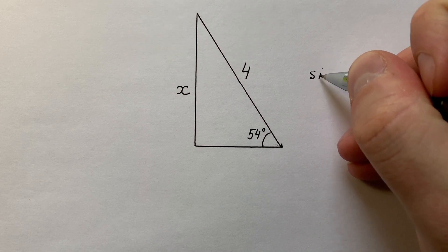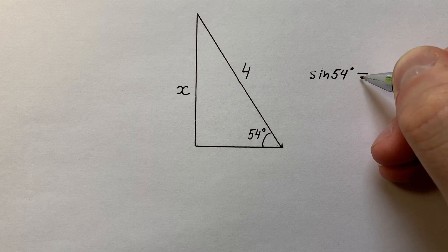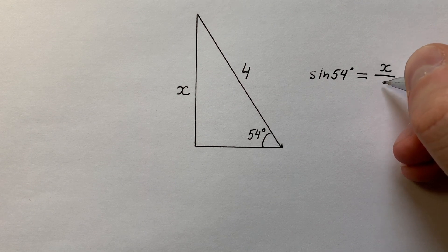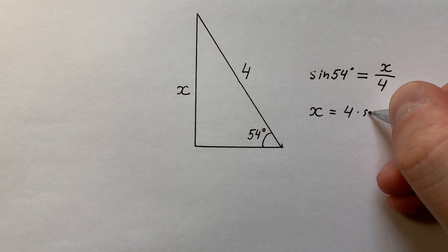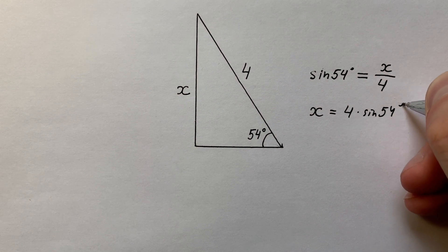Like sine 54 degrees equals x divided by 4, and then we get that x equals 4 times sine 54 degrees.